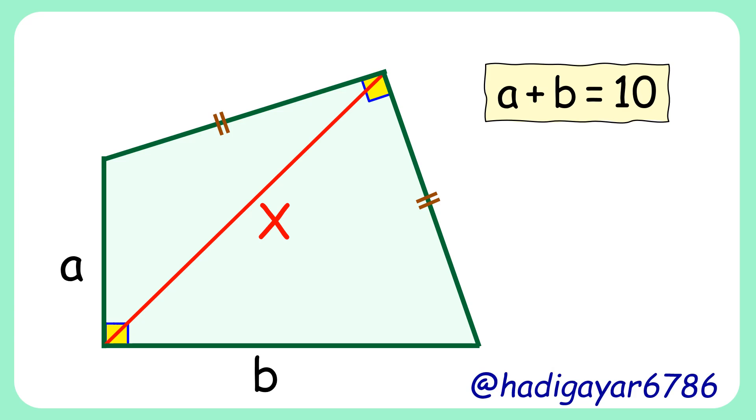In this question, two opposite angles are 90 degrees each, two adjacent sides are equal in length, and the sum of the other two adjacent sides is 10 cm. Using this data, we have to find the length of diagonal or value of x.